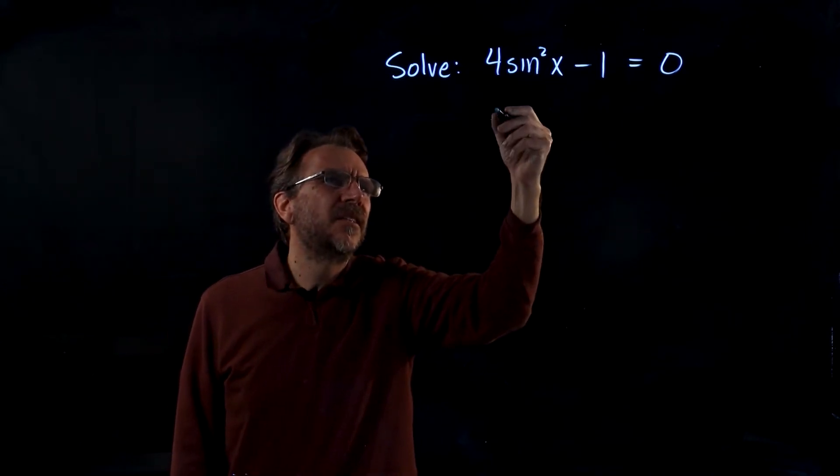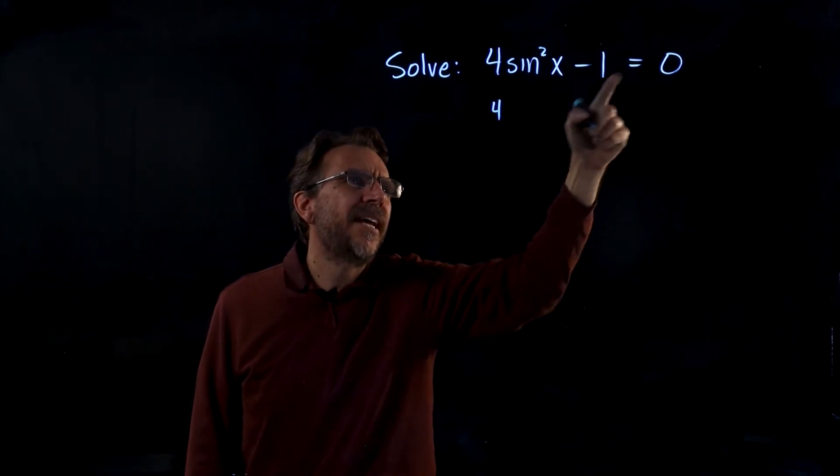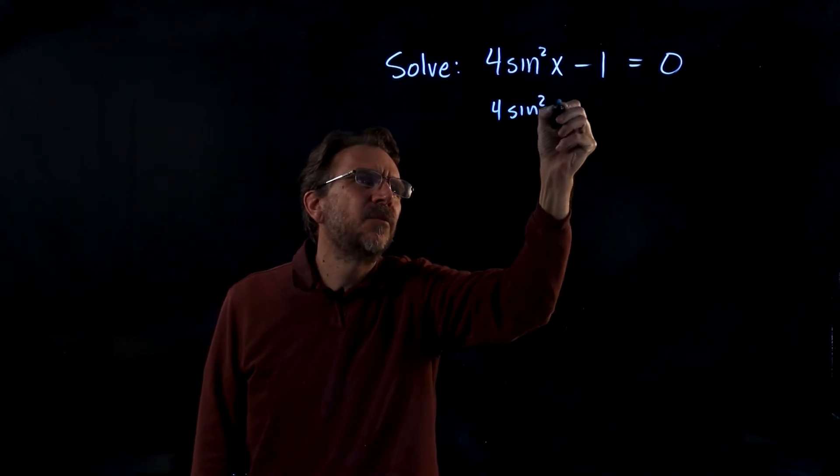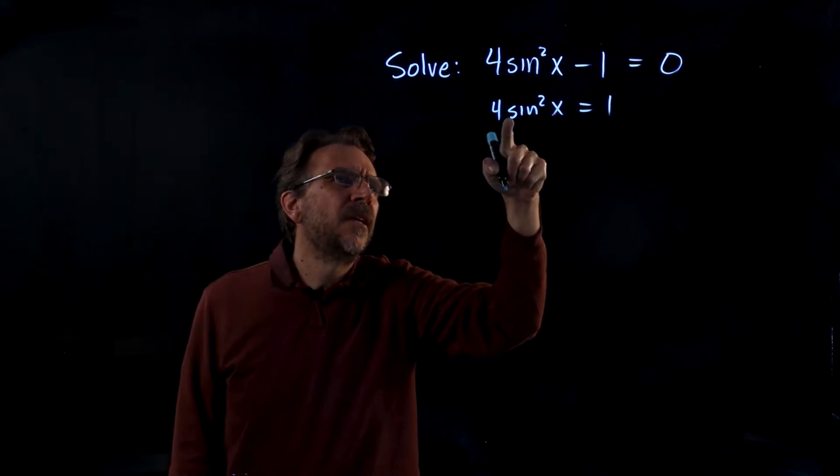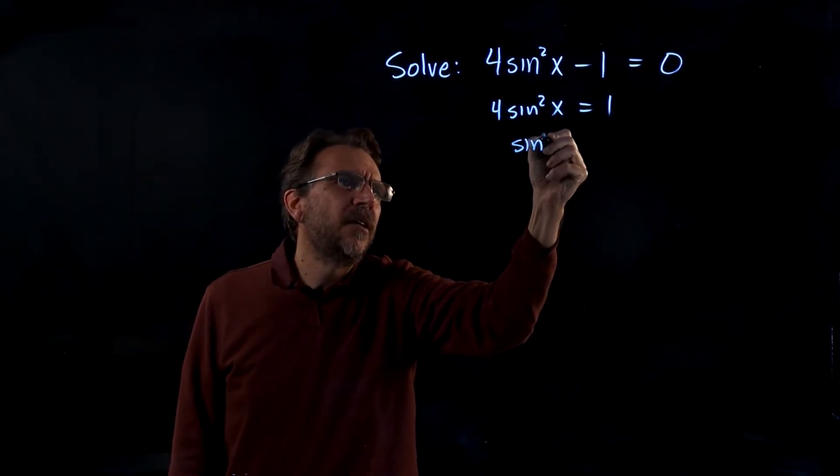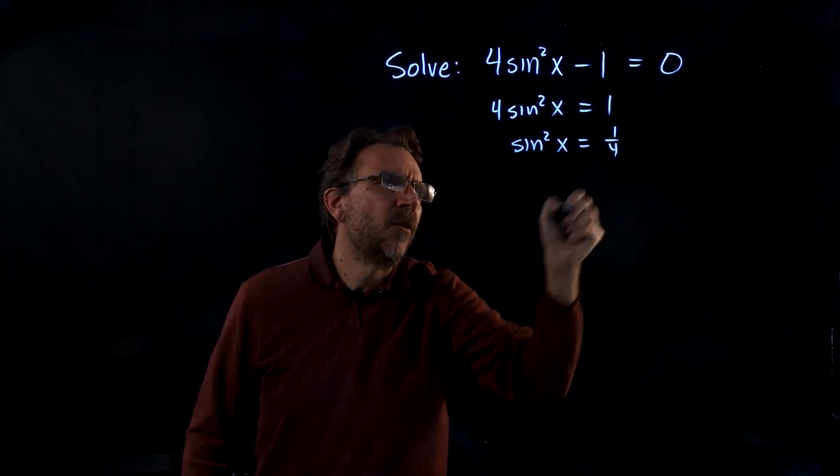So I'm going to isolate the square, and that means we'll go ahead and add 1. And I have sine squared x equals 1. Now dividing by 4, I'll have sine squared x equals 1 fourth.